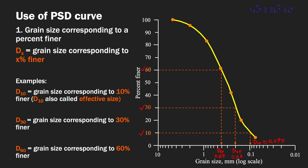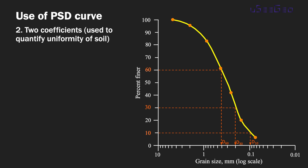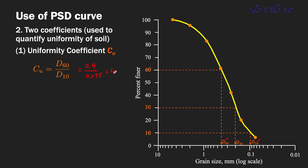The second type of information you can get from a PSD curve are two coefficients used to quantify the uniformity of soil, which are used in soil classifications. The first is called the uniformity coefficient, C-sub-U, defined as the ratio of D60 over D10. For this example, D60 is 0.4 and D10 is 0.095, giving a Cu value of 4.21.